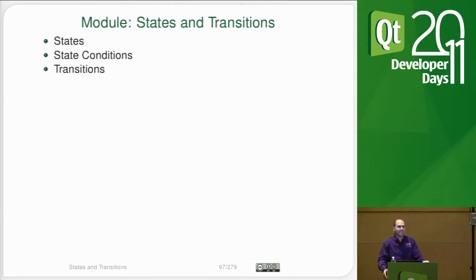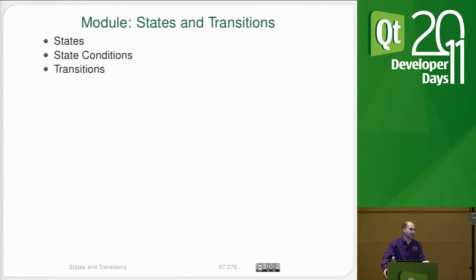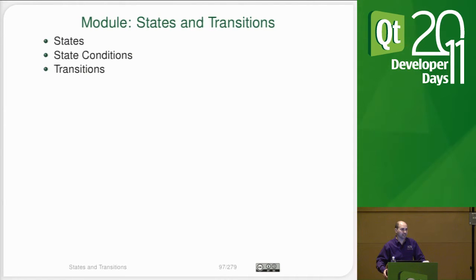We're going to talk about states and transitions. State machines are built into the language. Every item has a concept of a state and also has a variable that's an array called states. So each item can have its own state machine. It's a very simple state machine, meaning there are no parallel states and no substates — just a simple list of states, and you can be in one of those states at any given time.